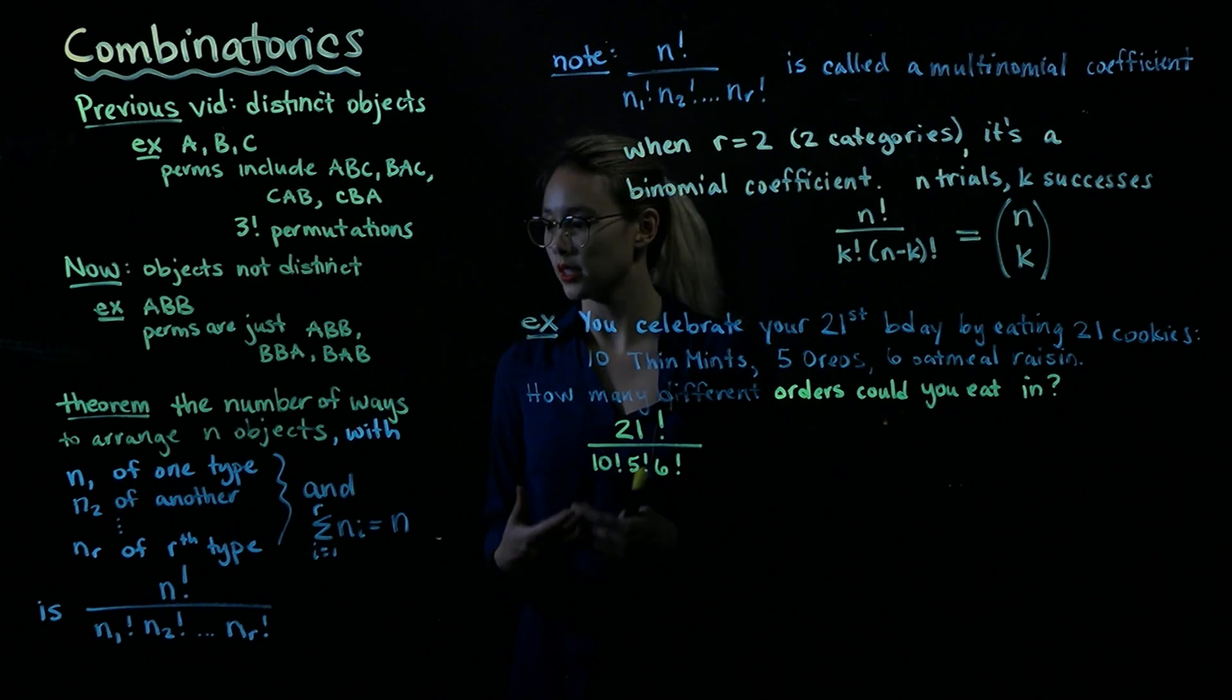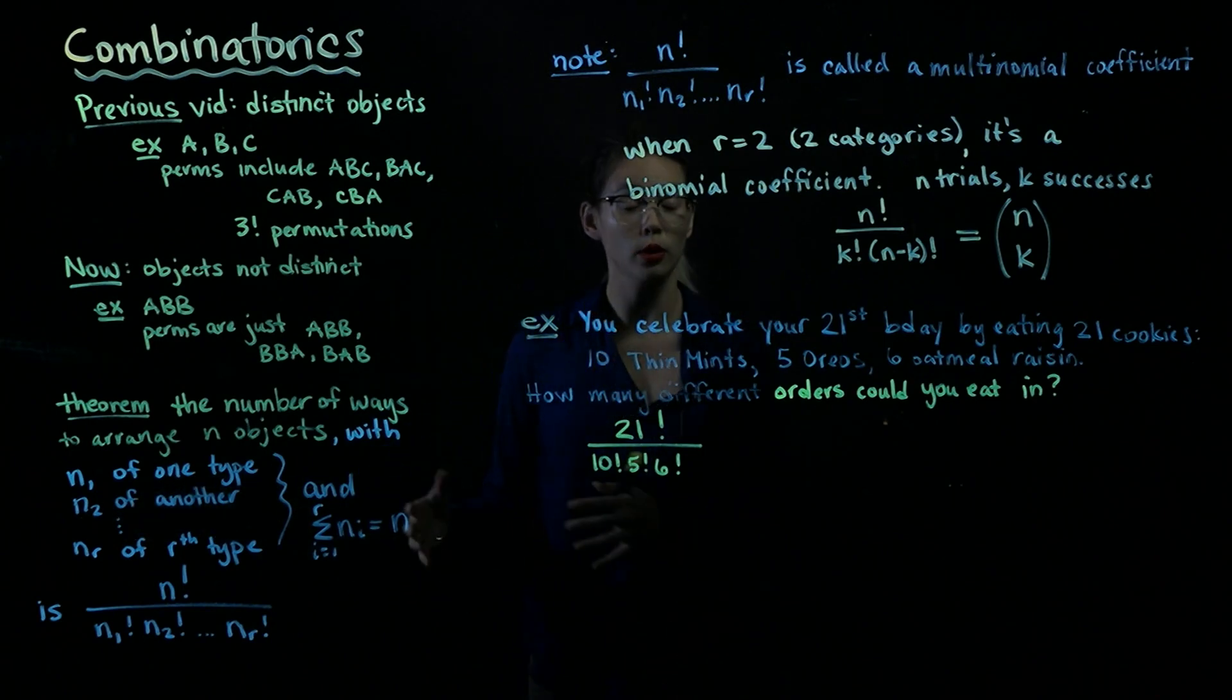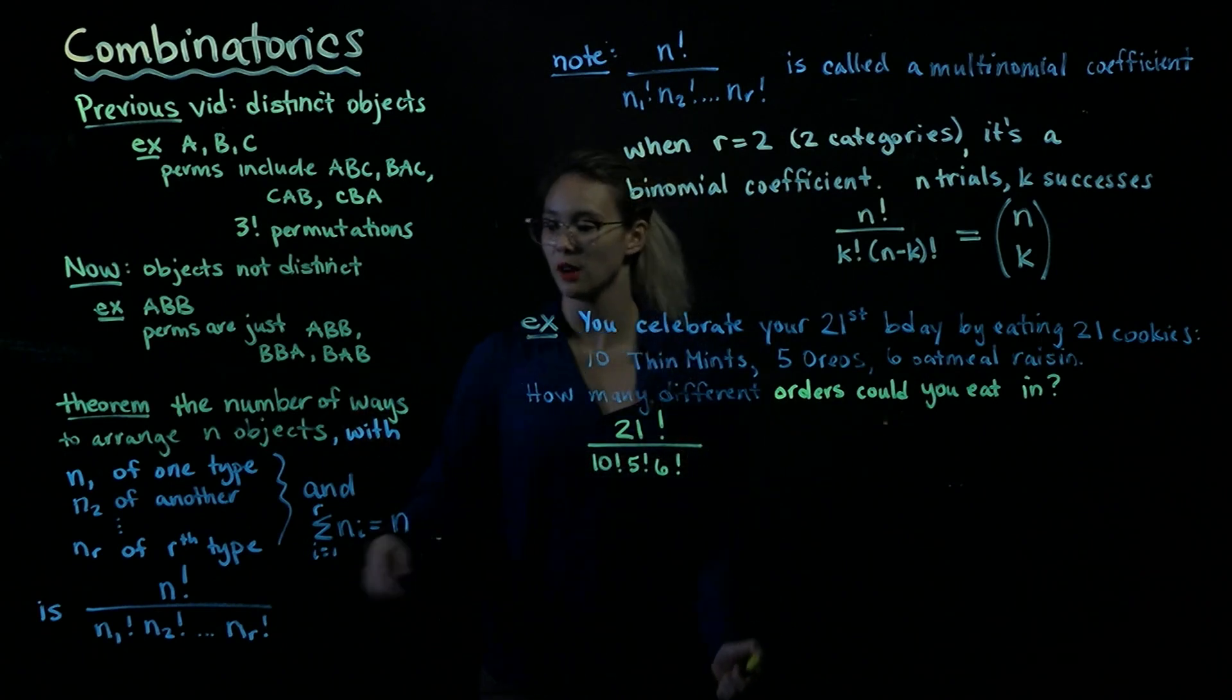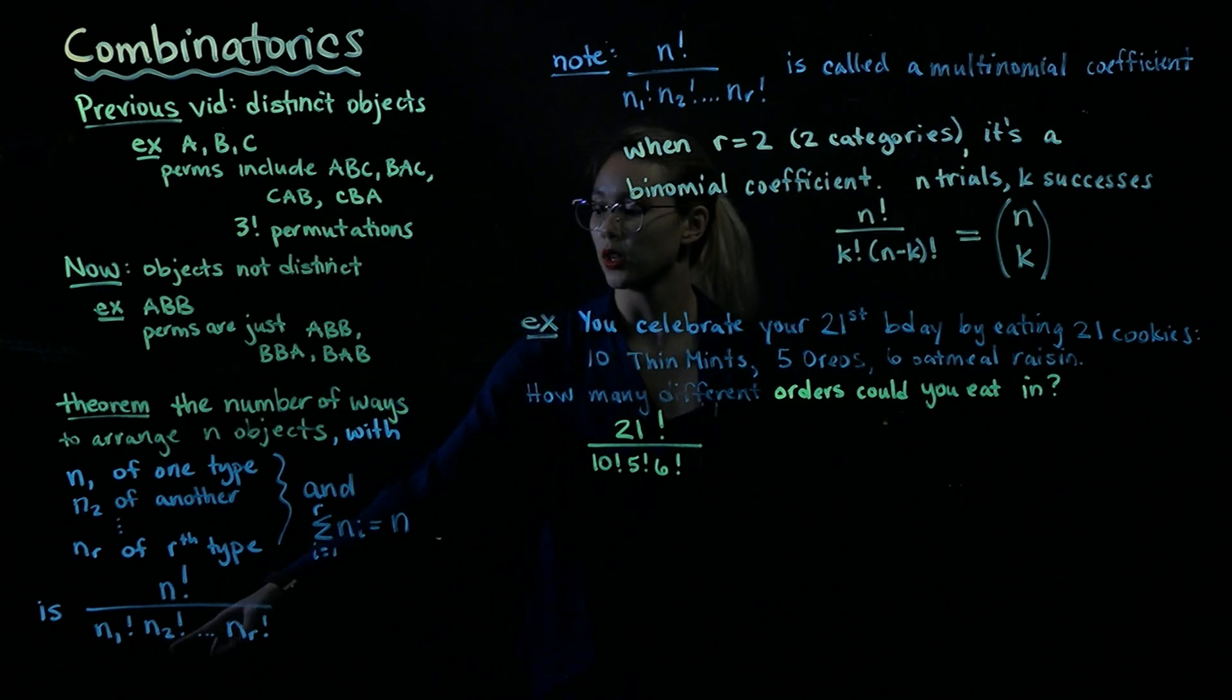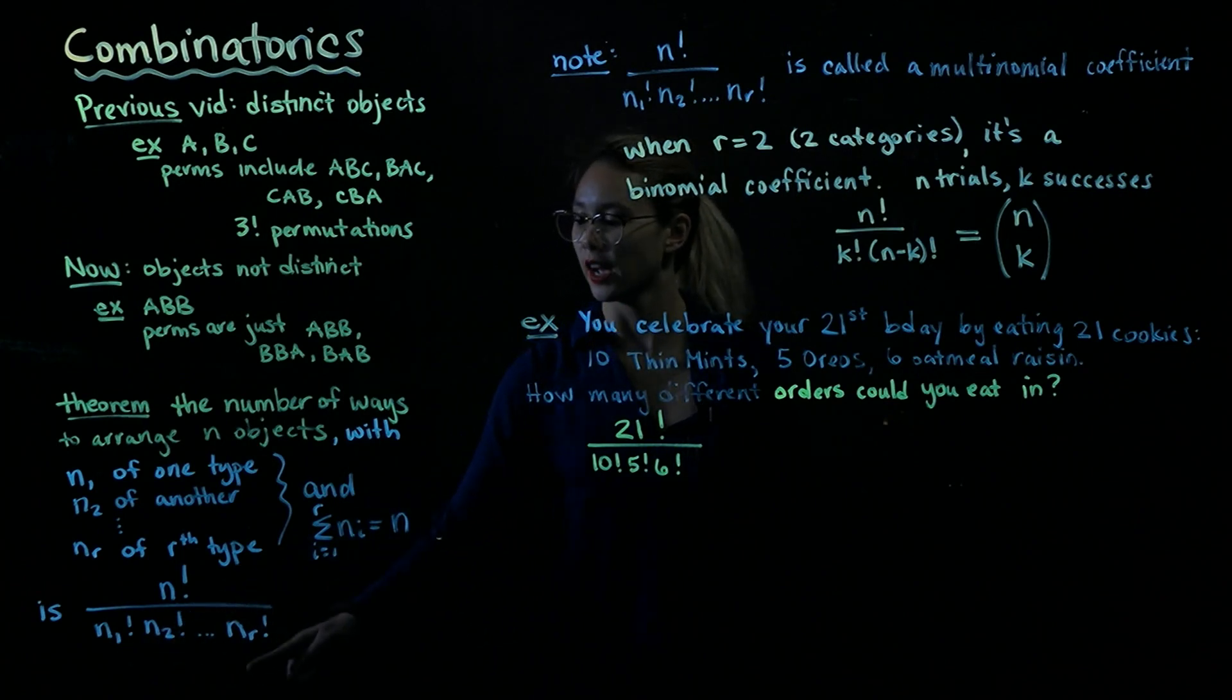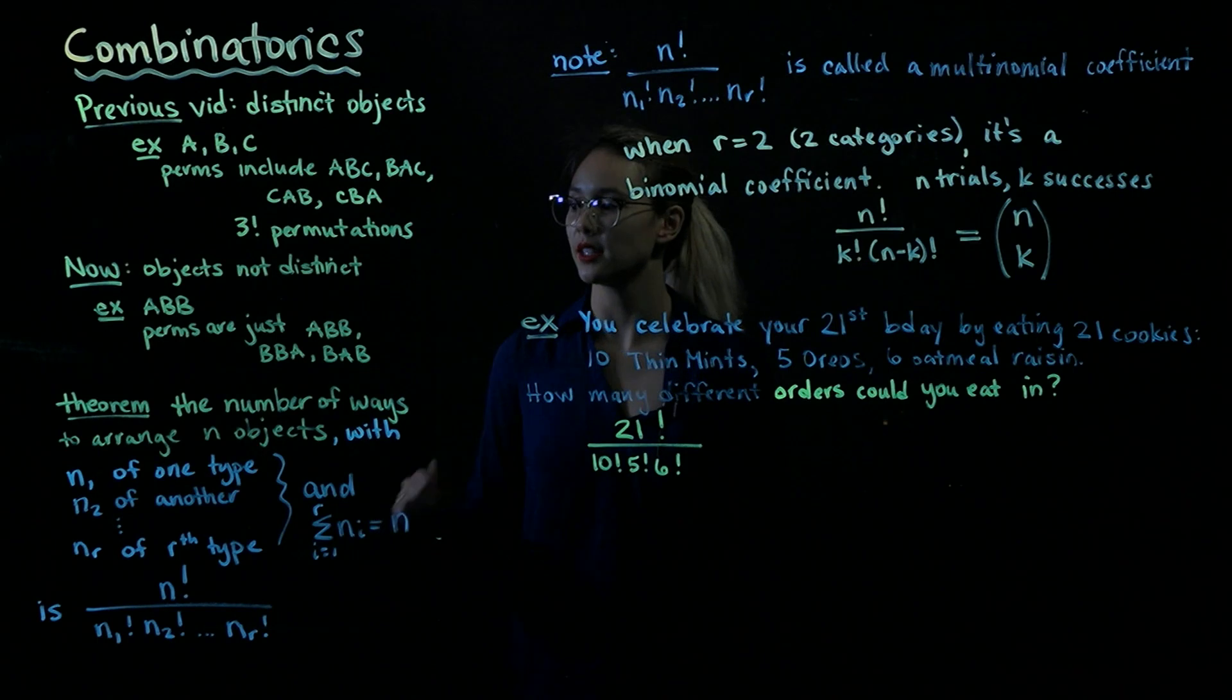And similarly, when we get to the second category, we have n2 of that type. Those are also all exchangeable. And so we need to divide by the number of ways that we could exchange the n1 objects of type 1. We need to count the number of ways that we could exchange the n2 objects of type 2, and so on. So we need to divide by these numbers down in the denominator. So that's the intuition for why this counting is true.